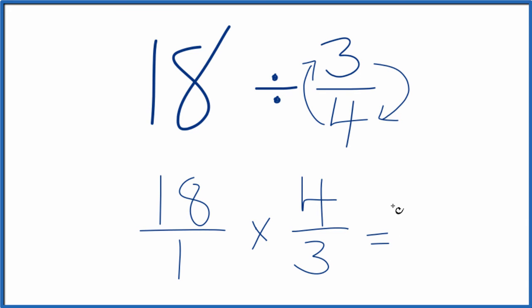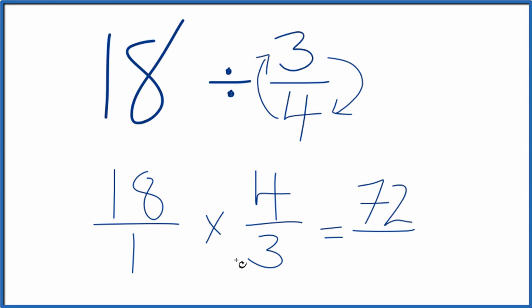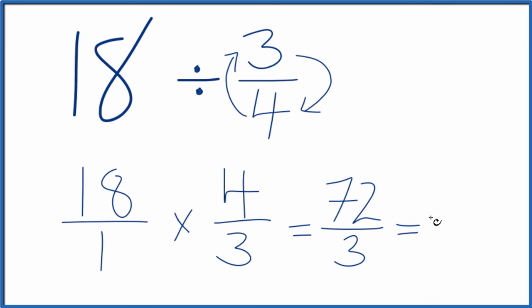18 times 4 is 72. And 1 times 3, that's 3. If we divide 72 by 3, we end up with 24.